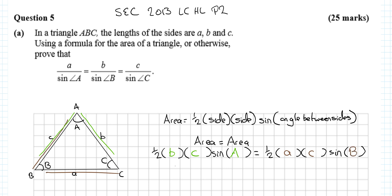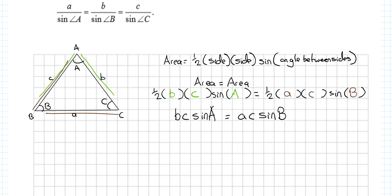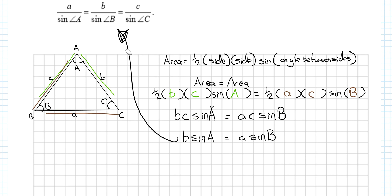Multiply both sides by 2: bc·sin A = ac·sin B. Now divide both sides by c: b·sin A = a·sin B. Remember what I'm trying to get — I want the small a on top.